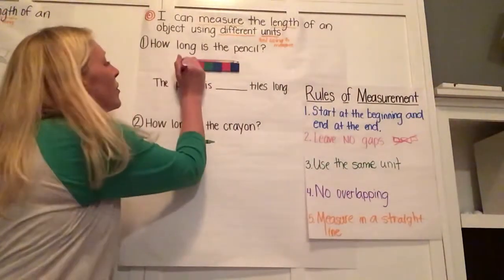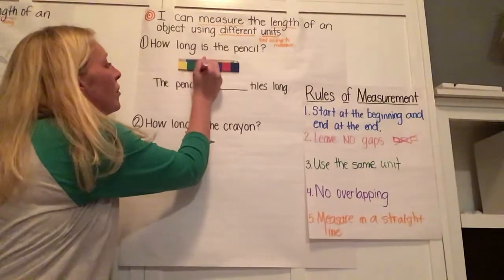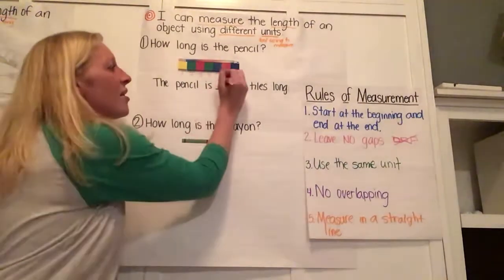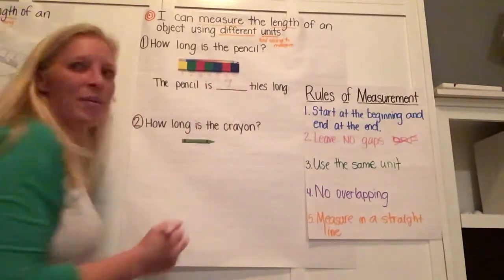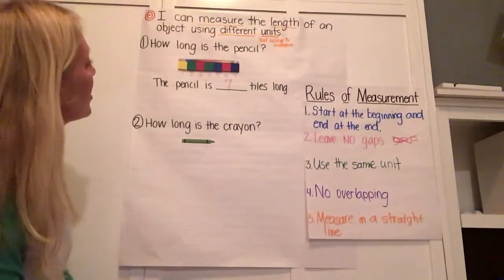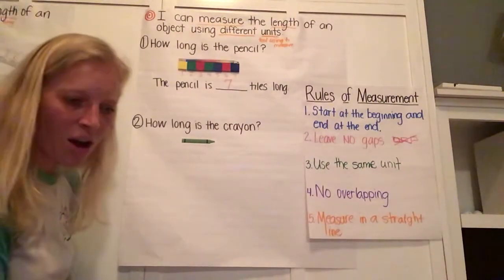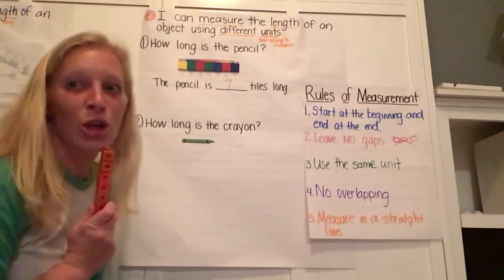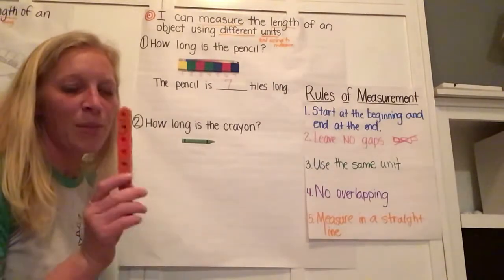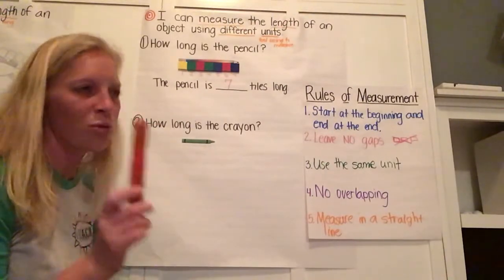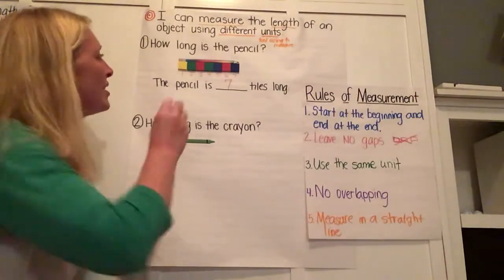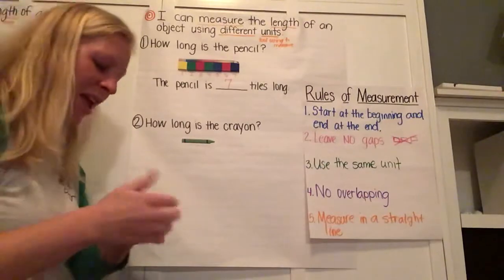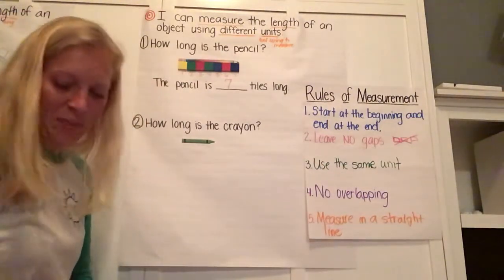How many tiles long is my pencil? Let's find out. One, two, three, four, five, six, seven. It's the same size as Kim's fish. My pencil is seven tiles long. What if I used cubes? Not little cubes, but regular sized cubes. They're not the same exact size as my one inch tiles. How many cubes long would my pencil be?